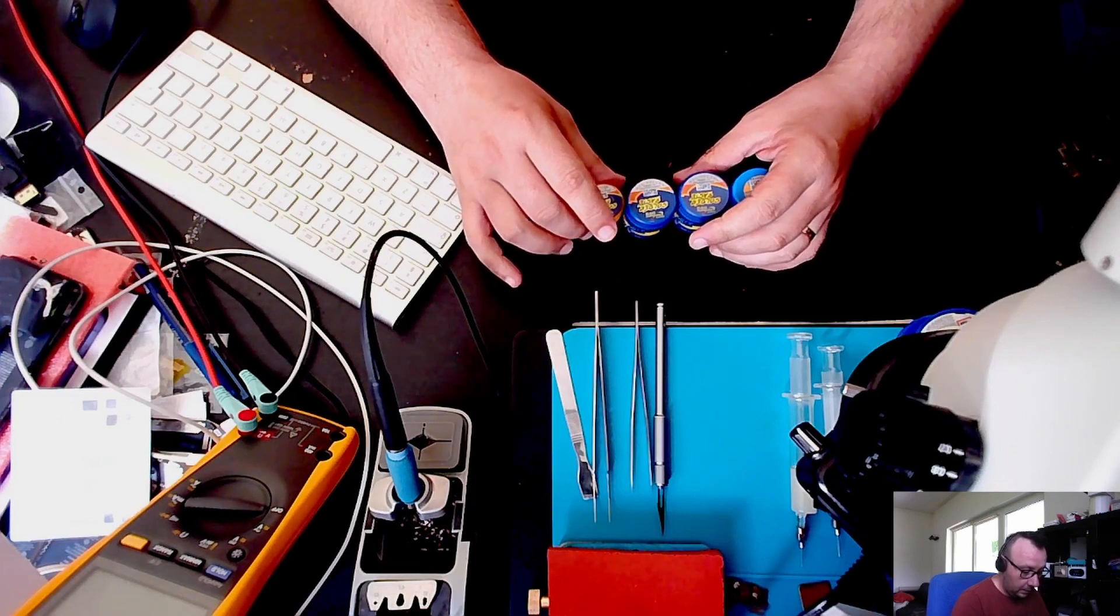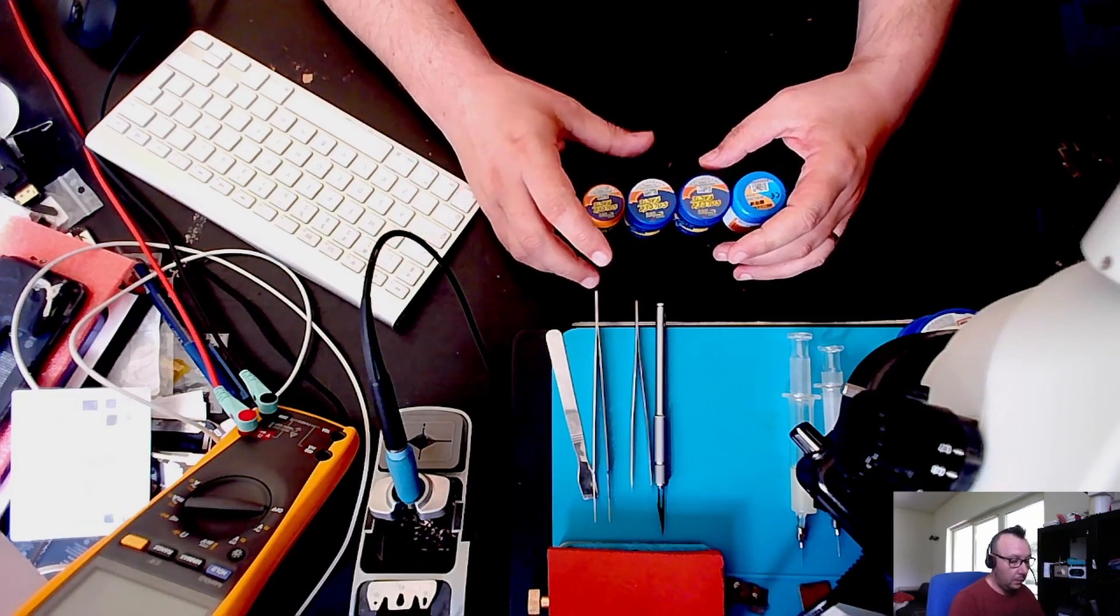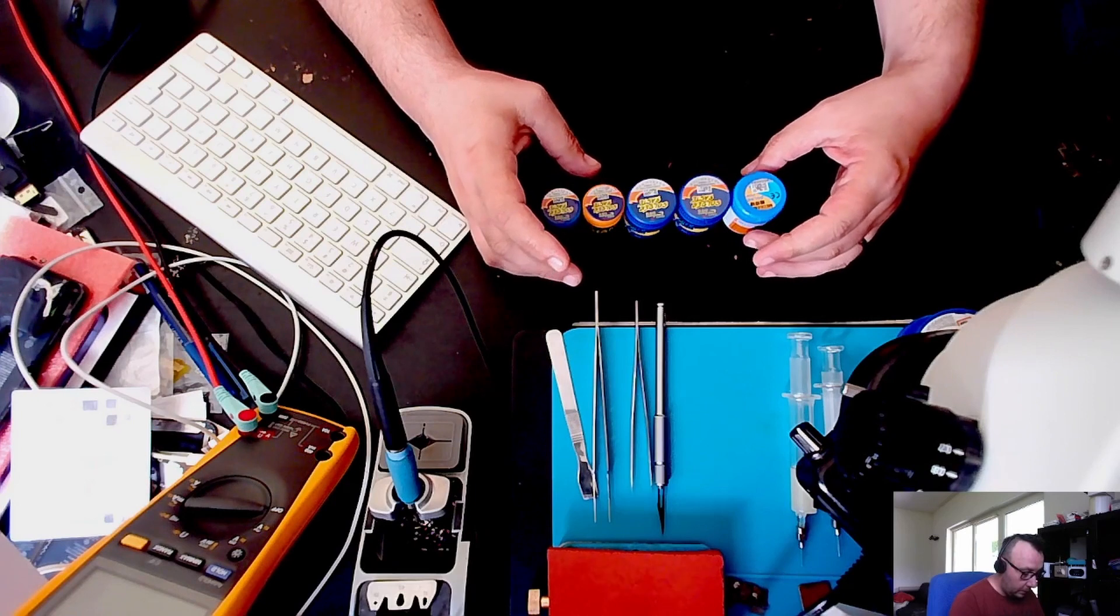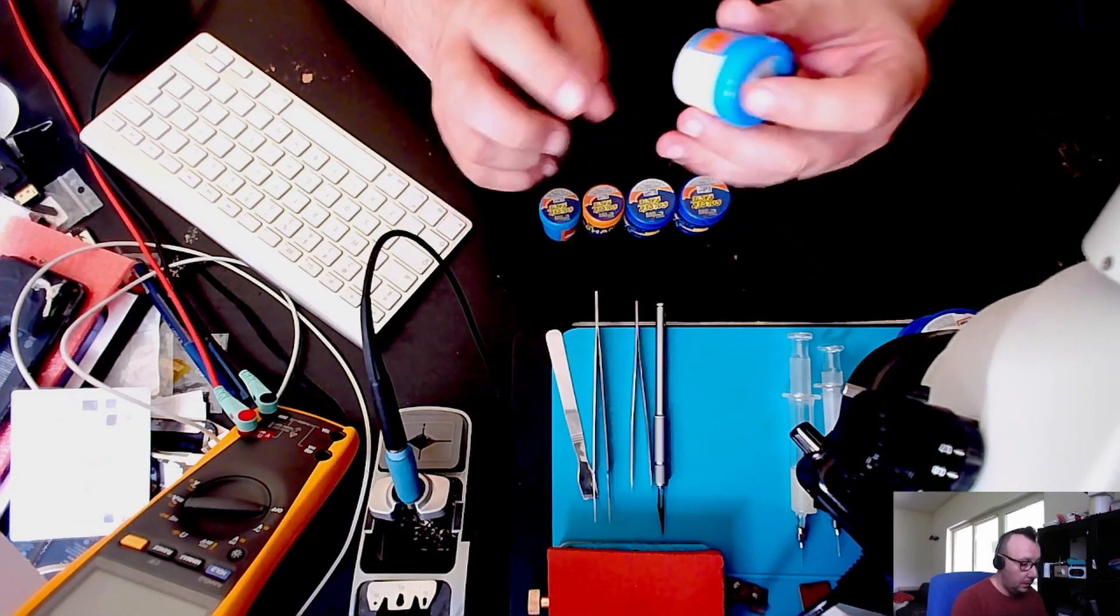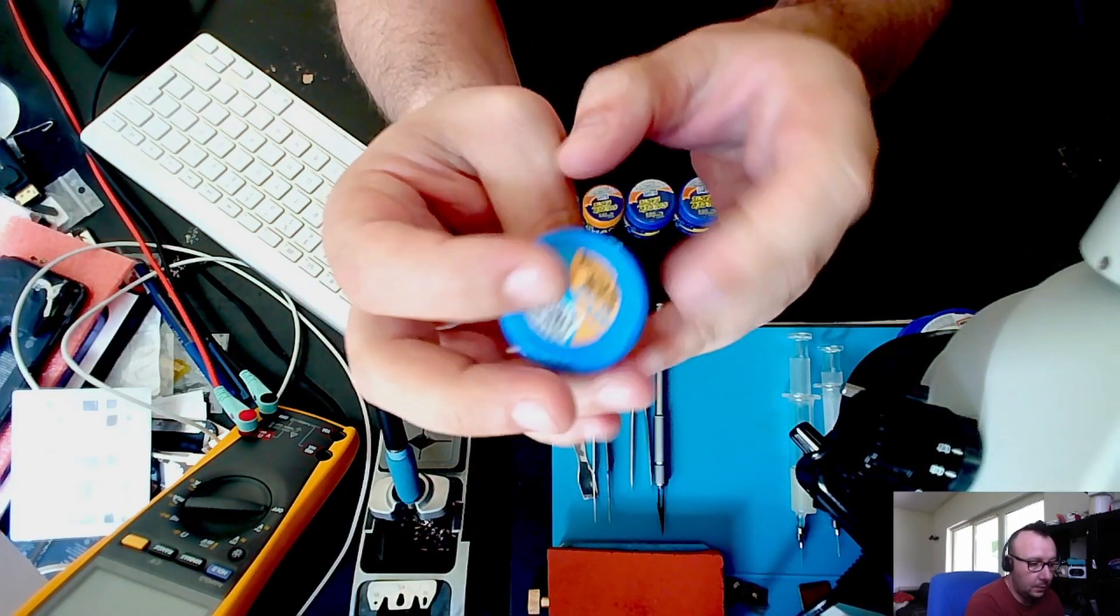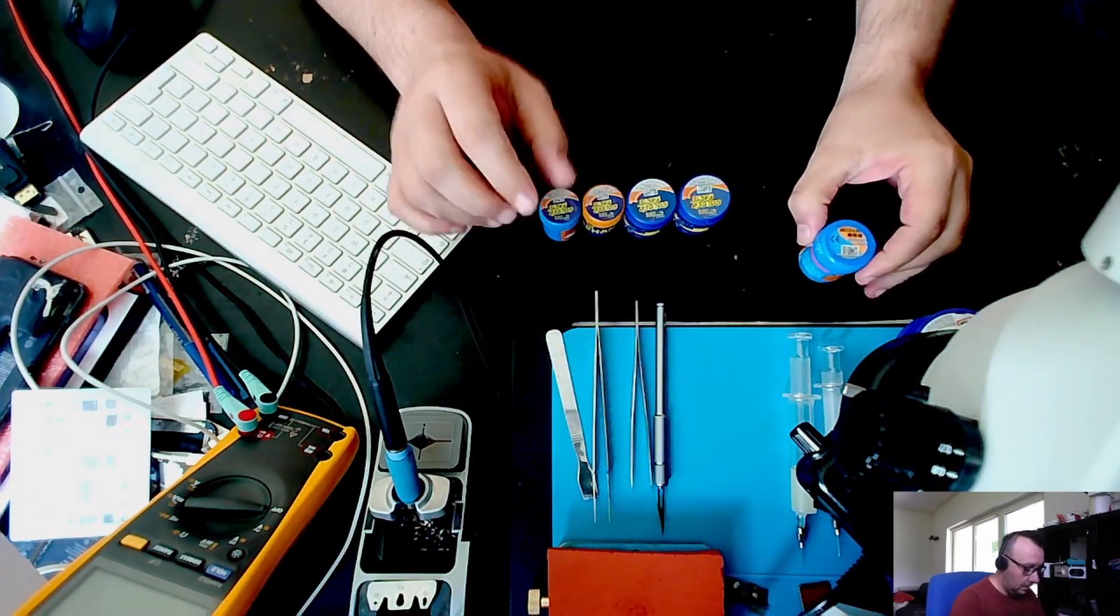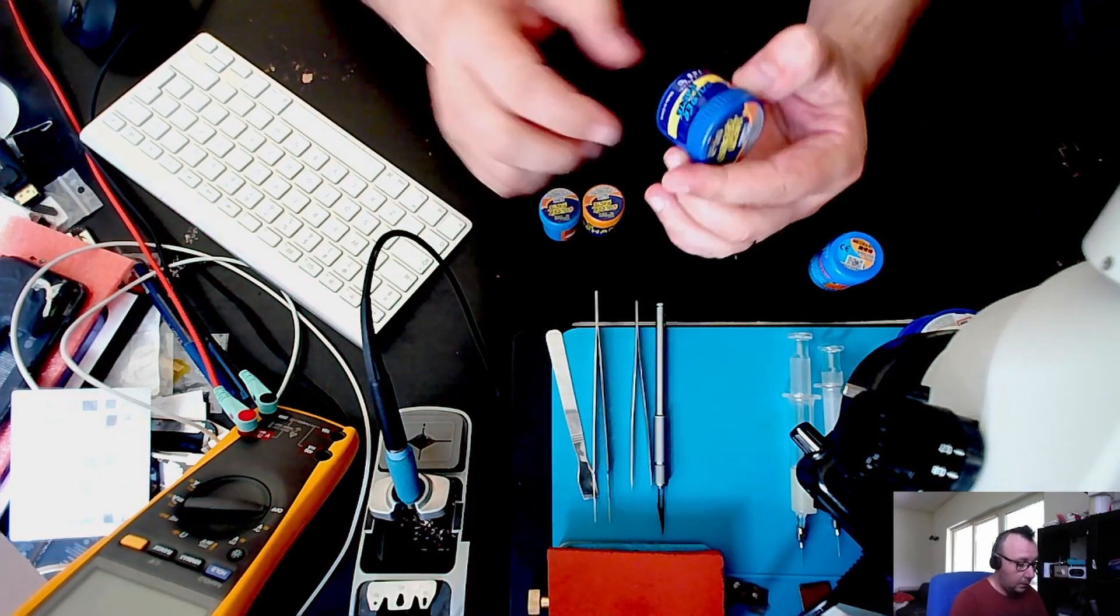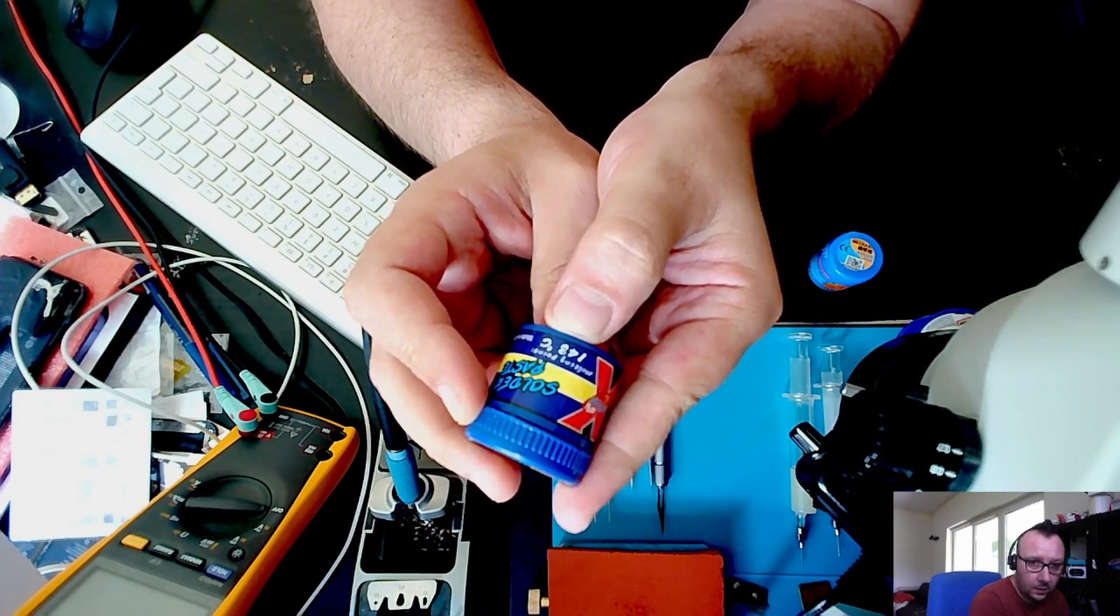Either we reball ICs or we reball boards, or we try to solder various chips. We need several types of paste. First we need the 183 paste. This is the Mechanic 183 that I use to solder all the chips and CPUs, NANDs, everything.